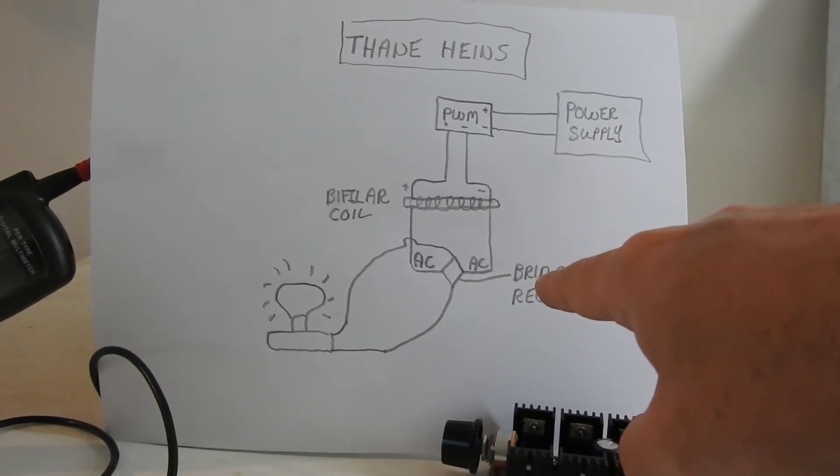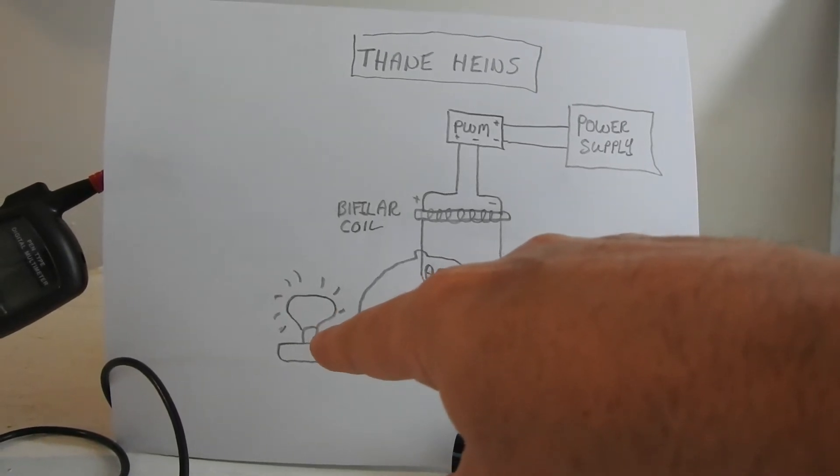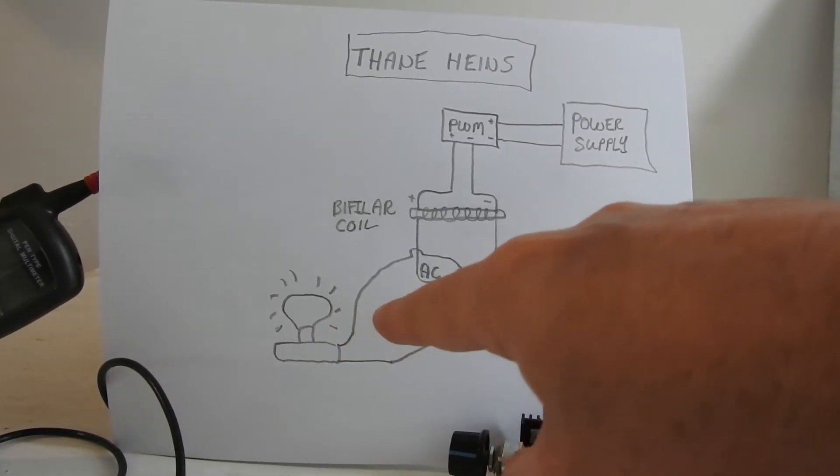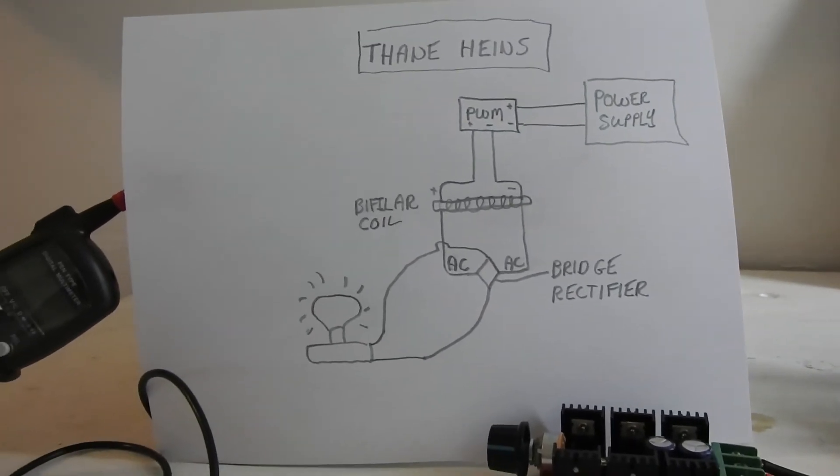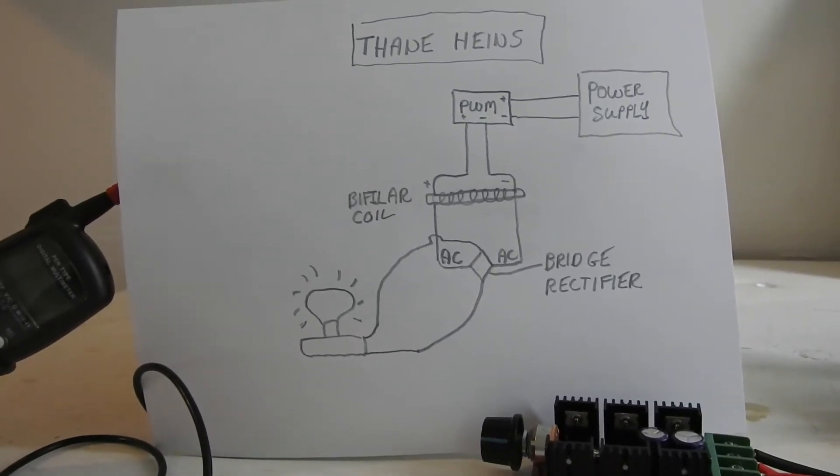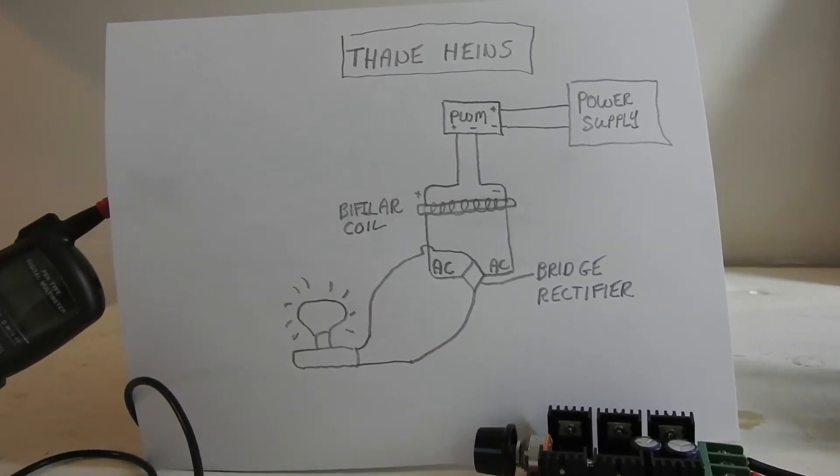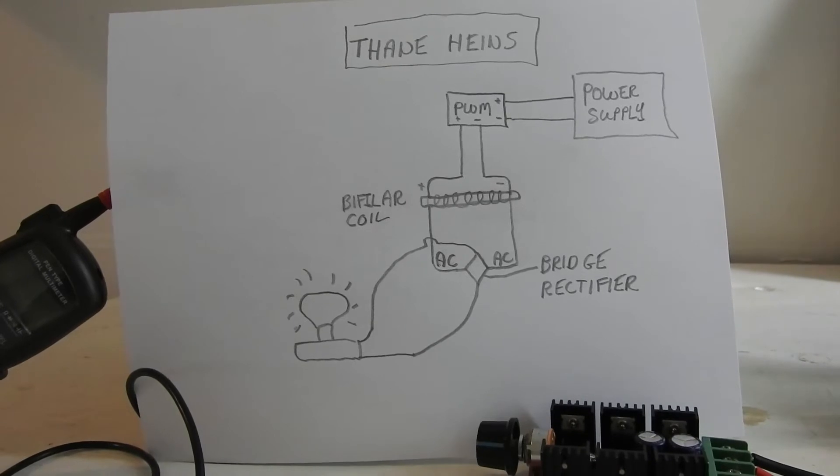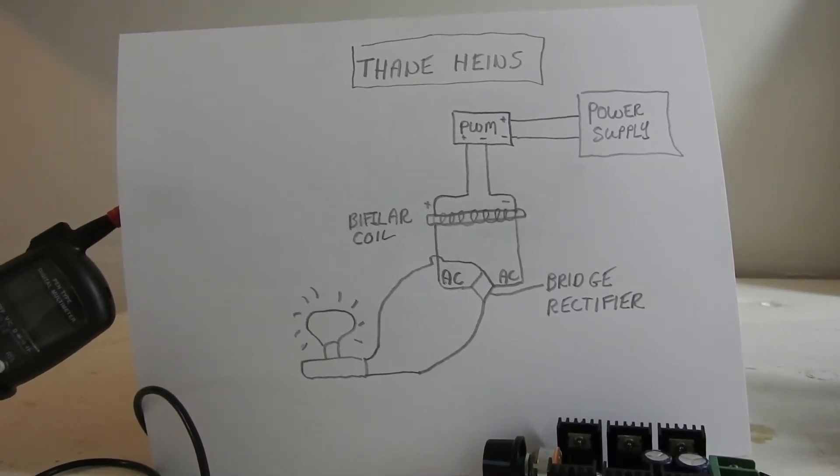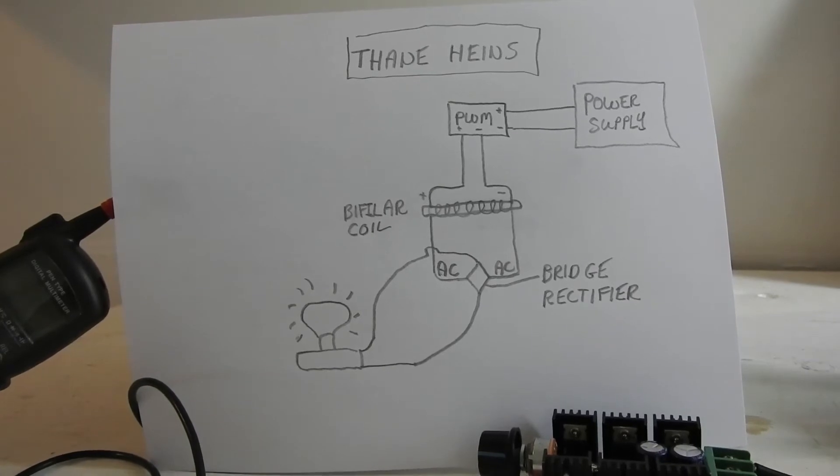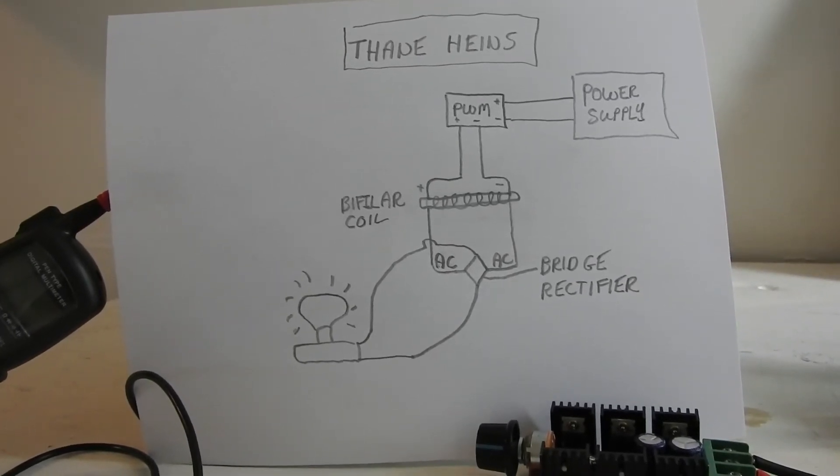And the bridge rectifier is going into the light bulb. So I'm going to turn it on and just show you what the power consumption is when the system is turned on without the light, so it's the power required to run everything and the power going into the bifiler coil, and then I'll show you what happens when I actually put a load on it.